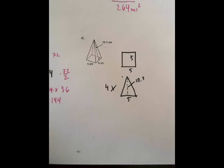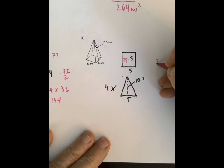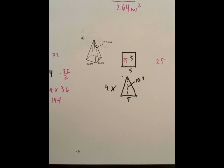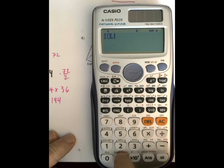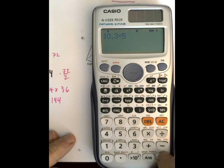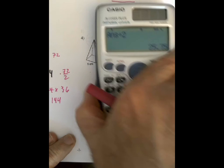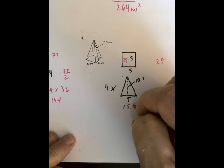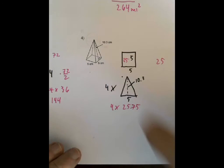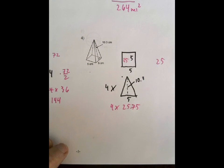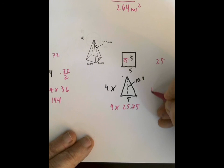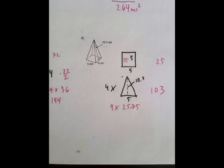So 5 times 5, that's 25. And then 10.3 times 5 on my calculator, 10.3 times 5 equals that, divided by 2 equals, and we're getting 25.75. So this triangle is 25.75, so one of the sides is 25.75. So we multiply it by 4 and we get 103. So the area of the four lateral sides are 103 total, plus the 25 gives us 128 square centimeters, and that's our answer.